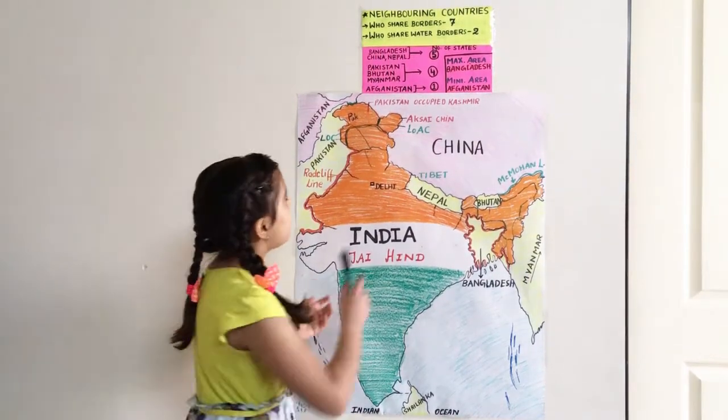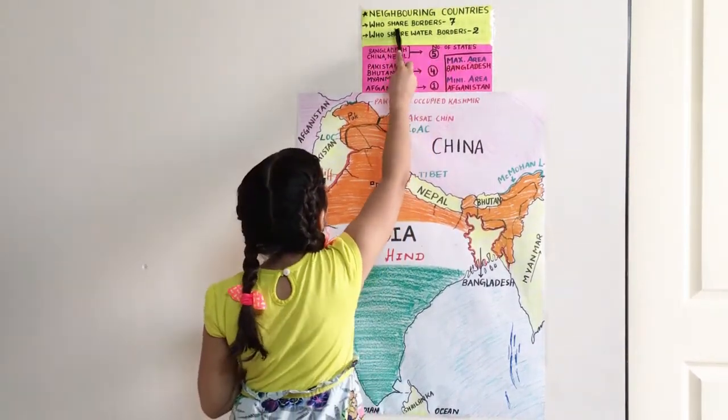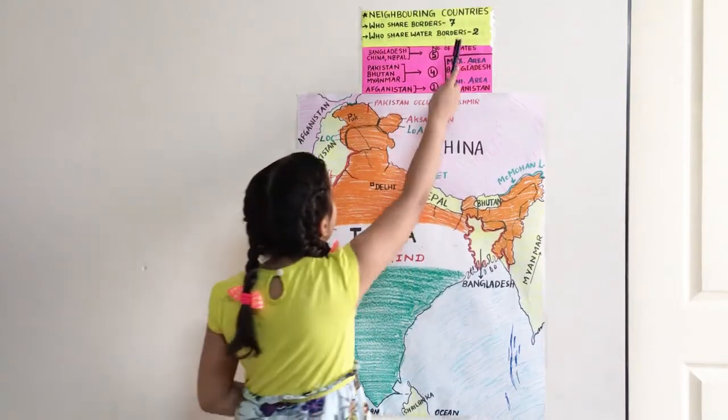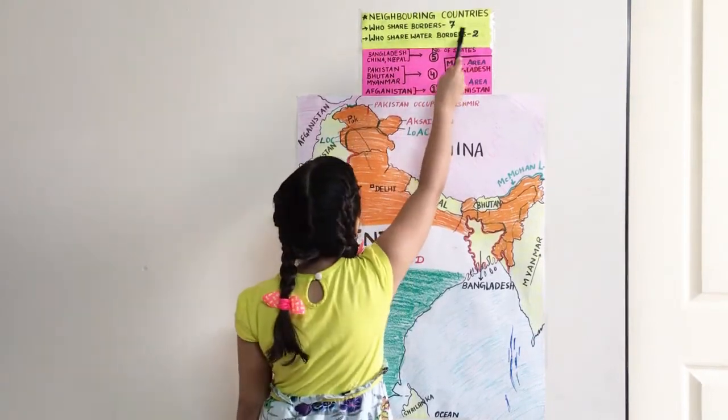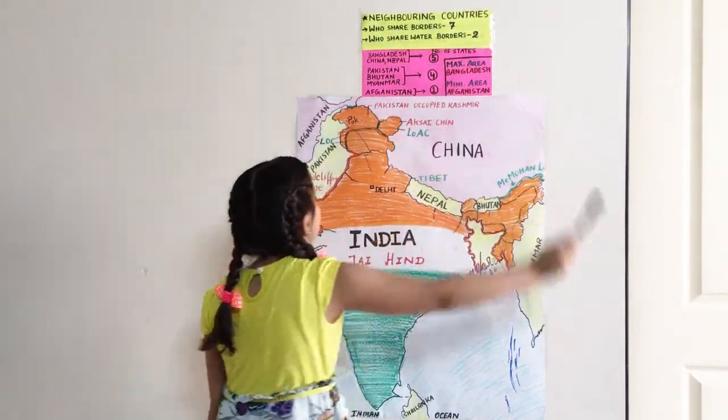There are seven countries who share land borders with India and there are two countries who share water borders with India.